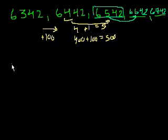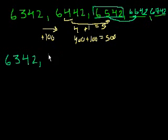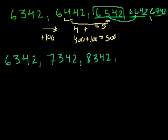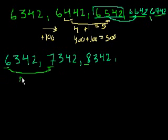Let's do another one. So here's the numbers — starting with 6,342. This pattern is very similar to the previous one, but what are we incrementing right now? The 342 stayed the same, but the thousands are changing. We went from 6,000 to 7,000 to 8,000. So we're adding 1,000 every time — plus 1,000, plus 1,000.